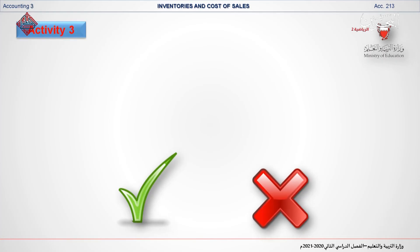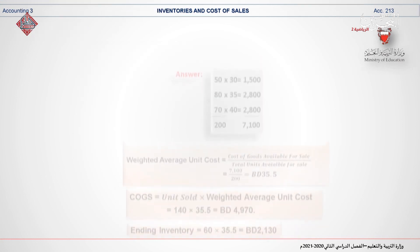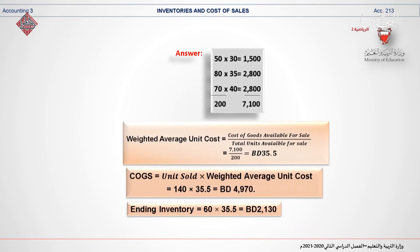Here is another true or false question. The following information is for May 2018. The cost of goods sold and cost of ending inventory under the weighted average method were stated as 4,790 BD and 2,130 BD respectively. Do the calculation yourself. This statement is false — the cost of goods sold should be 4,970 BD, as shown in the calculation.